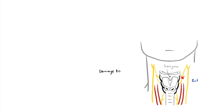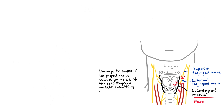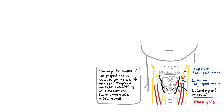Damage to the external branch of the superior laryngeal nerve or to the superior laryngeal nerve trunk causes paralysis of the cricothyroid muscle — the tuning fork of the larynx — resulting in hoarseness that improves with time because of increased compensatory action of the opposite muscle. When someone presents with hoarseness, it is important to think about injury to the laryngeal nerves.